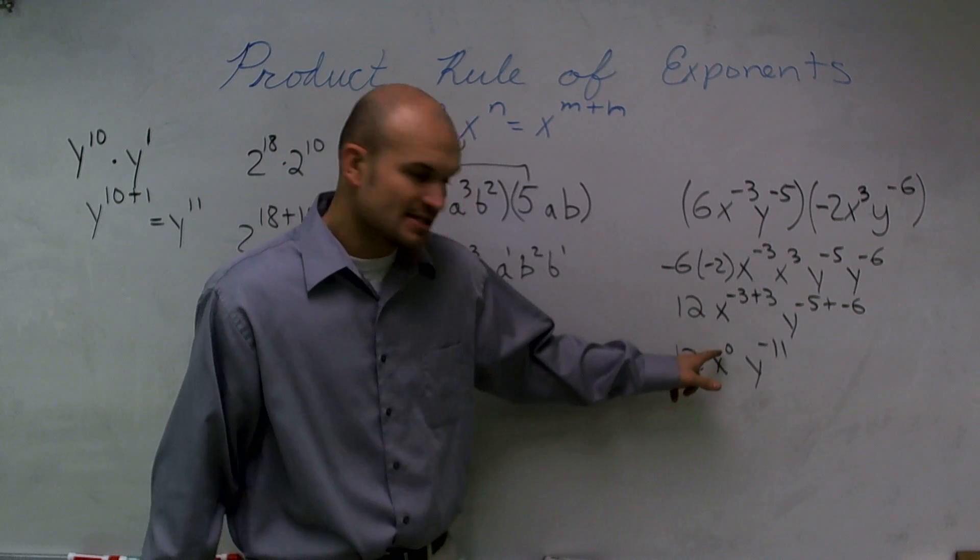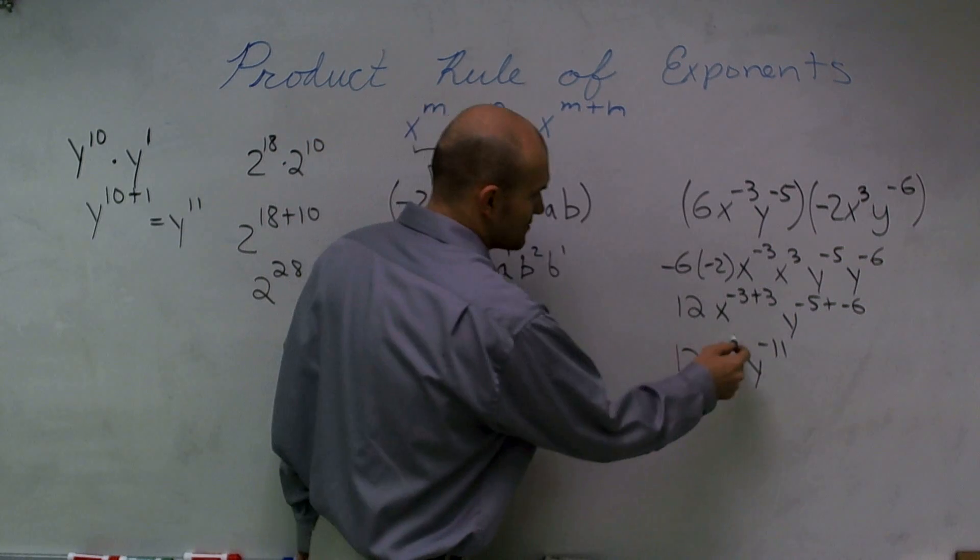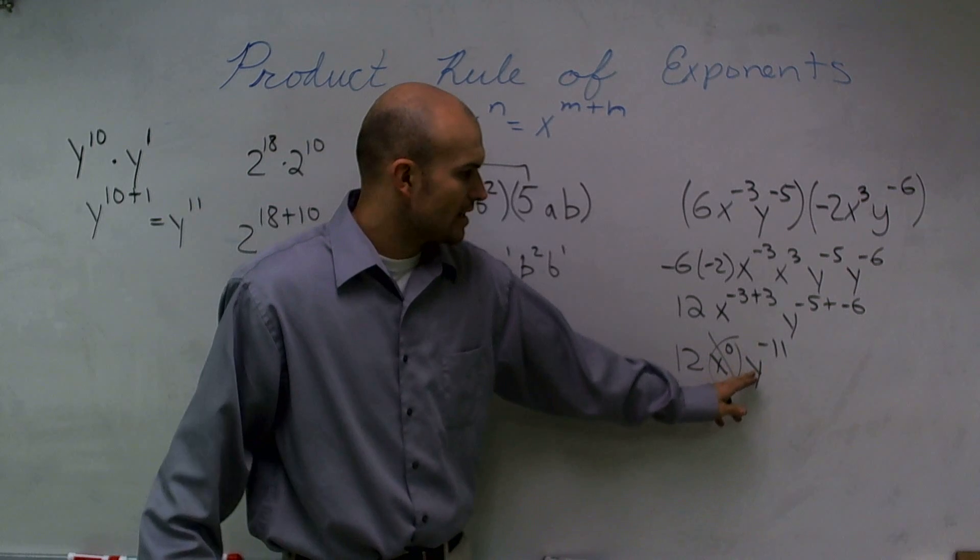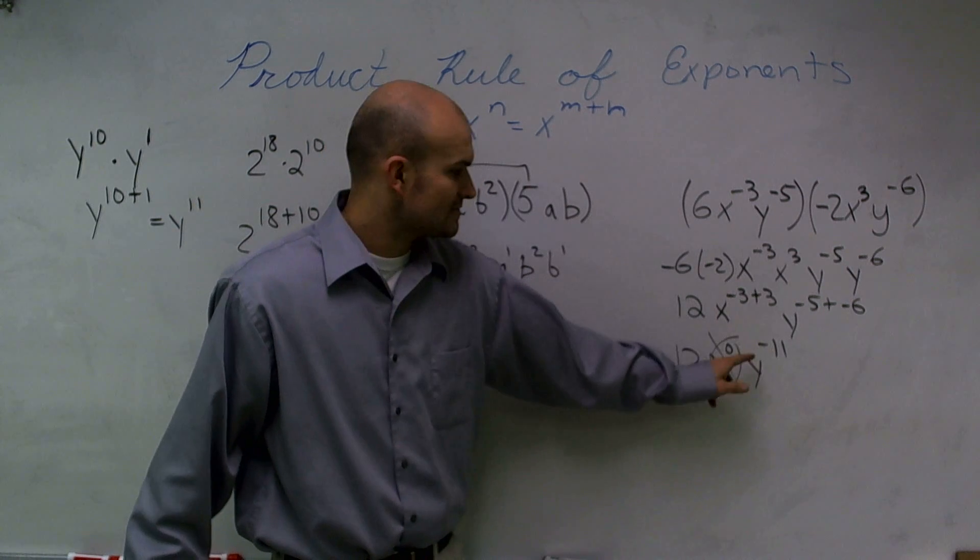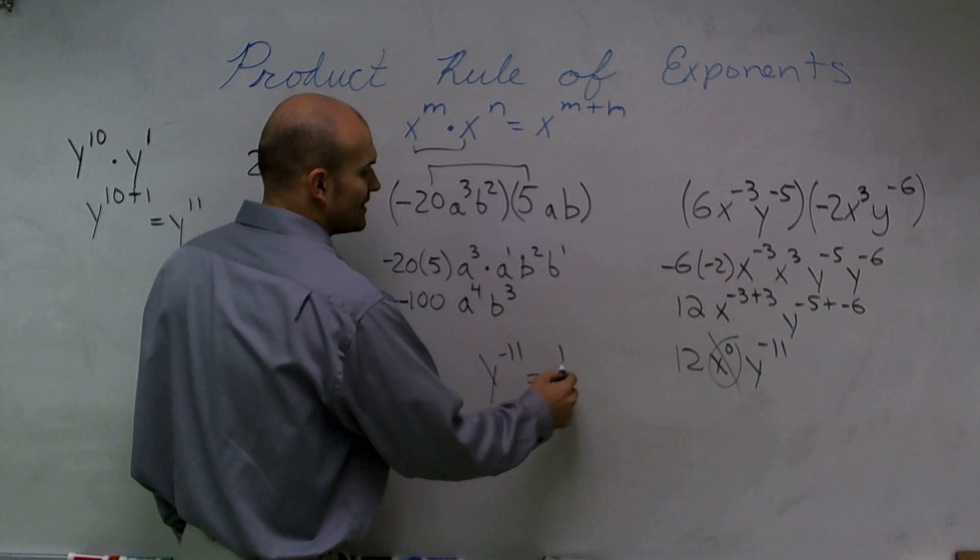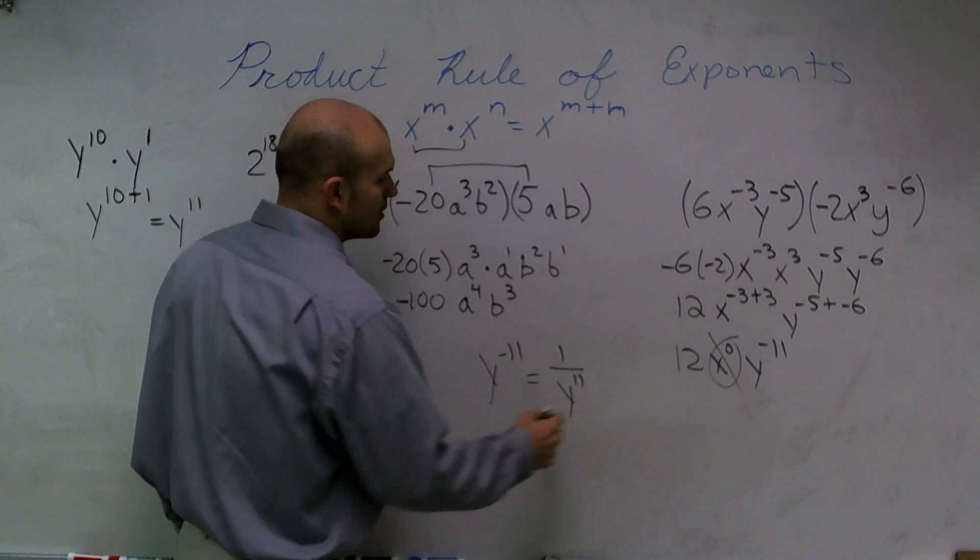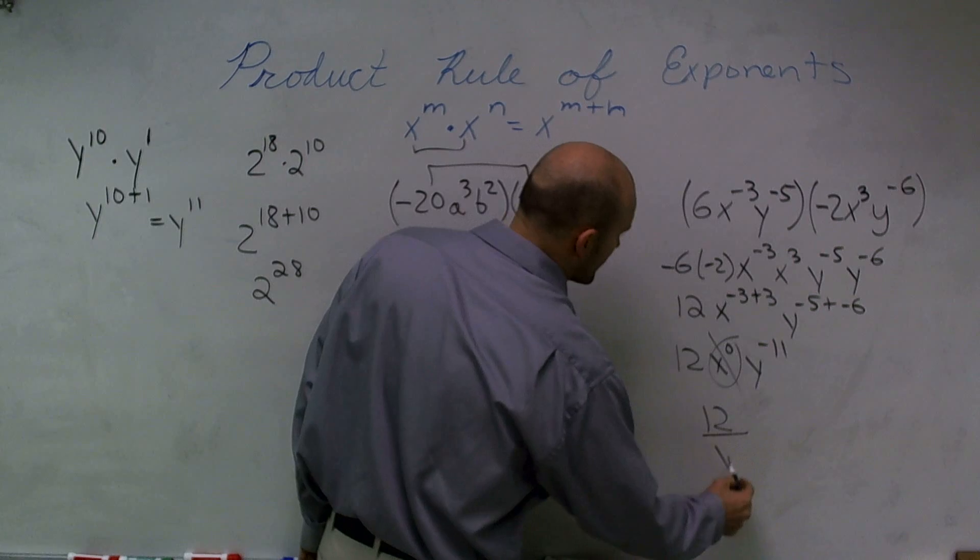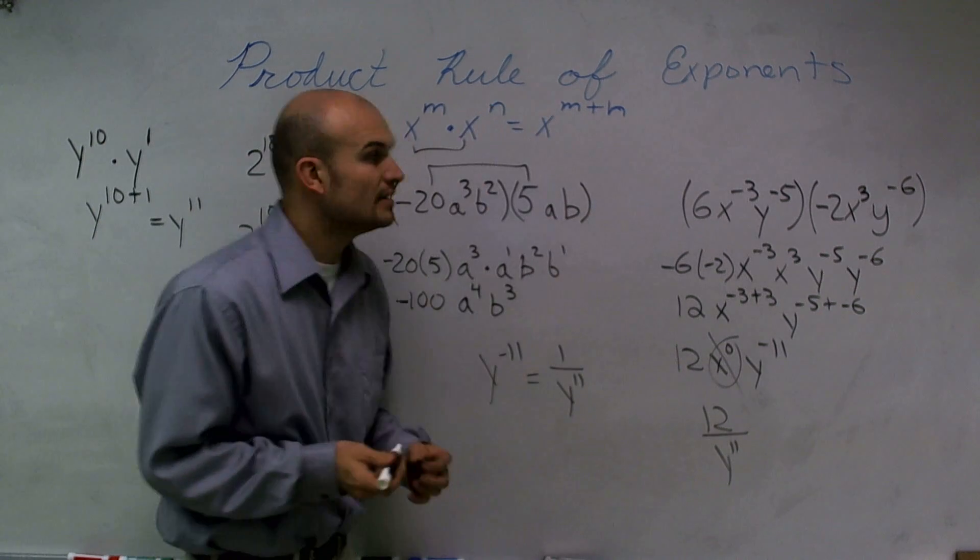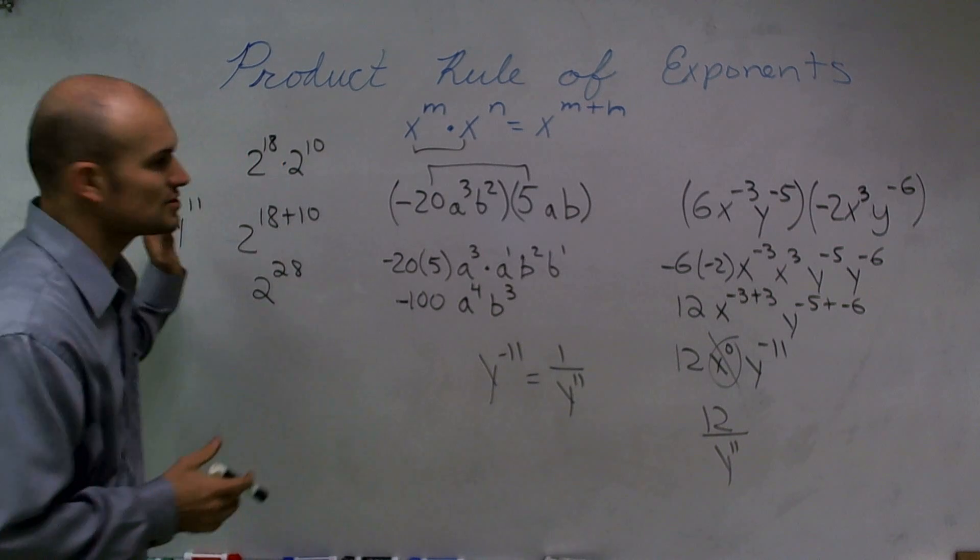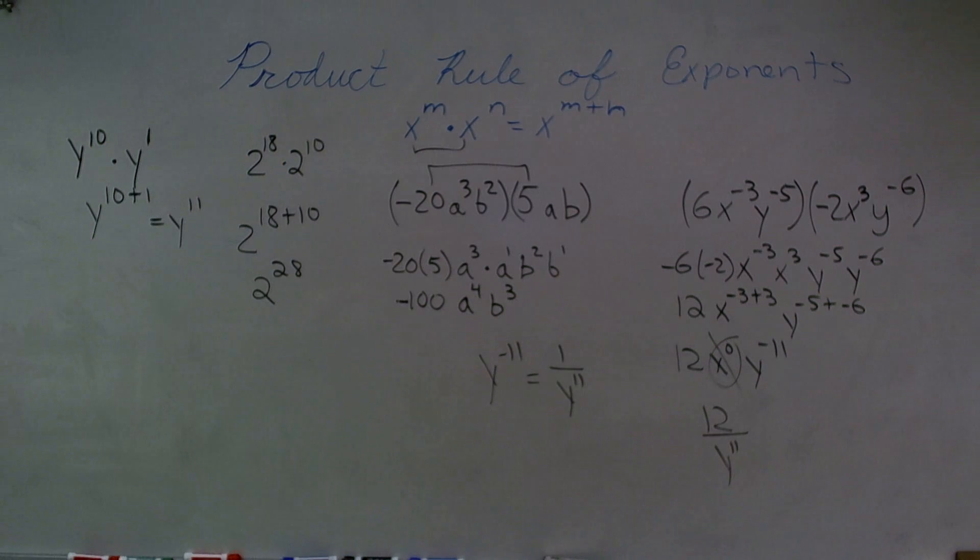Now, we learned that x to the 0 equals 1, so that's what we're going to cancel out to a 1. And we don't like to ever write our exponent as a negative. So instead of writing y to the negative 11, we know that we can write that as 1 over y to the 11. So therefore, my final answer will be 12 over y to 11. And that's how you use the product property of exponents to solve given equations or solve expressions, evaluate expressions, simplify expressions.